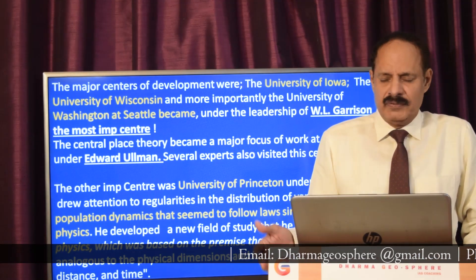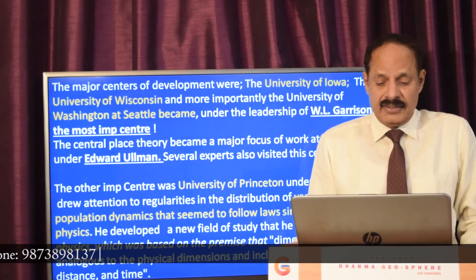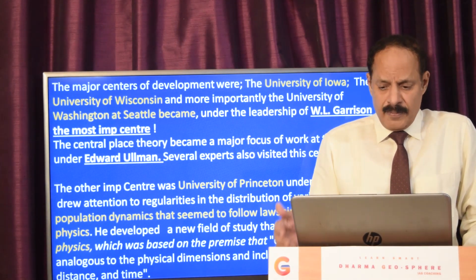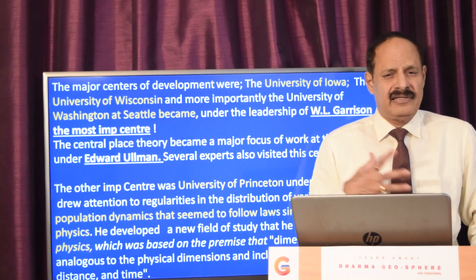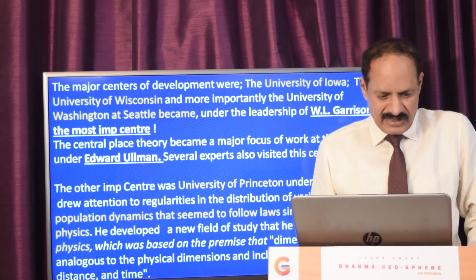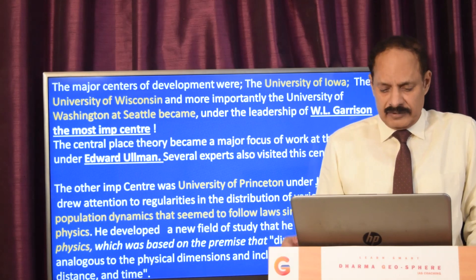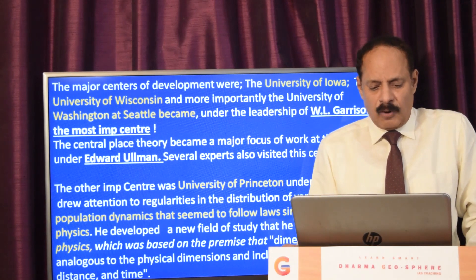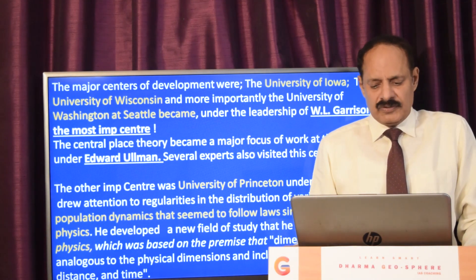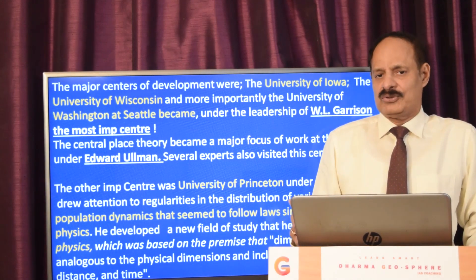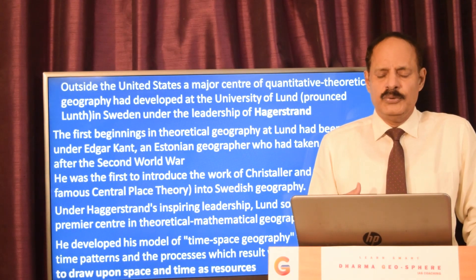The new orientation in geography towards the search for theory and morphological laws increasingly focused on the study of spatial patterns of diverse kinds. The major centers of development were the University of Iowa, the University of Wisconsin, and Seattle in Washington under Garrison, where Ullman's focus on central place theory also developed significantly. The other important center was Princeton University, where Stewart drew out regularities in the distribution of population dynamics that seemed to follow laws similar to those of physics — he developed a new field called social physics.